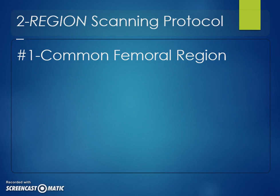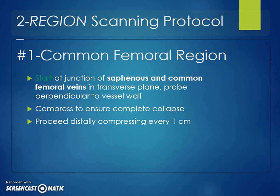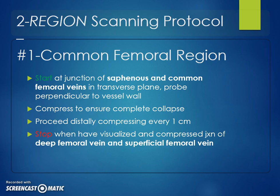Starting in the common femoral region, begin at the junction of the saphenous and the common femoral vein in the transverse plane. Hold the probe perpendicular to the vessel wall — don't just wedge it into skin folds. Have an assistant retract tissue if needed, get into that space, hold the probe perpendicular, and compress completely to ensure the vein completely collapses at the saphenofemoral junction. Then slide the probe distally, compressing about every one centimeter.